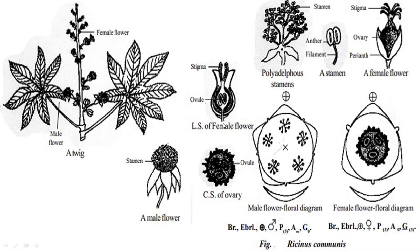In the longitudinal section of the female flower, the ovule is at the base and the stigma is at the apex. The ovary has two lobes in the anther. Cross-section of the ovary: the ovary is trilocular.